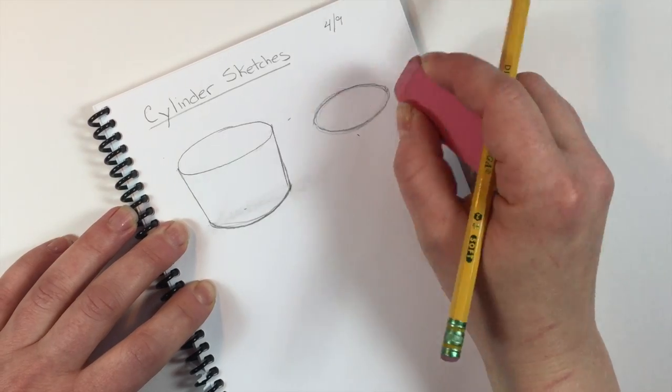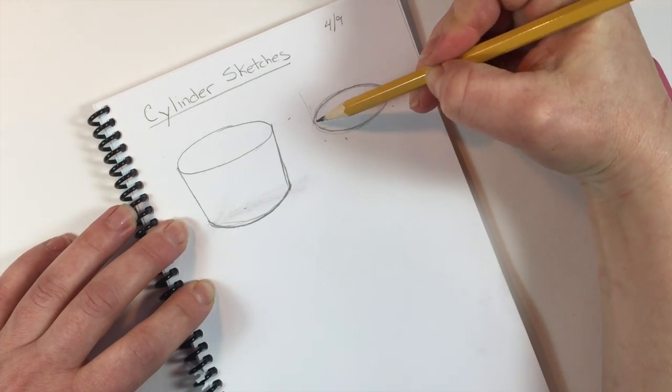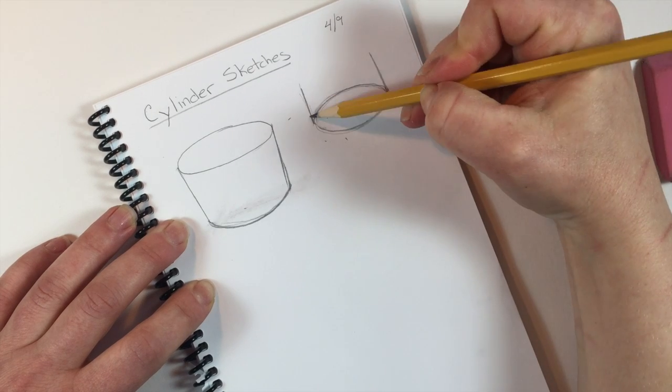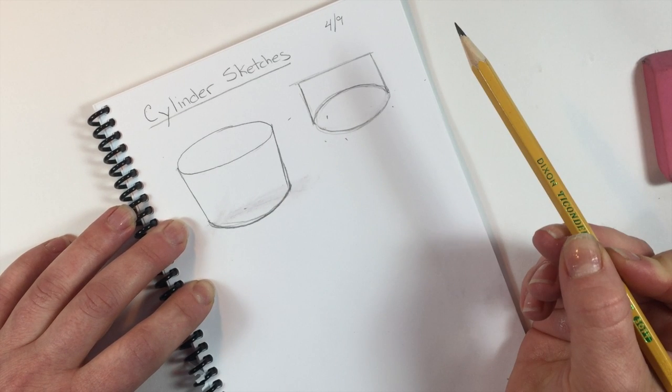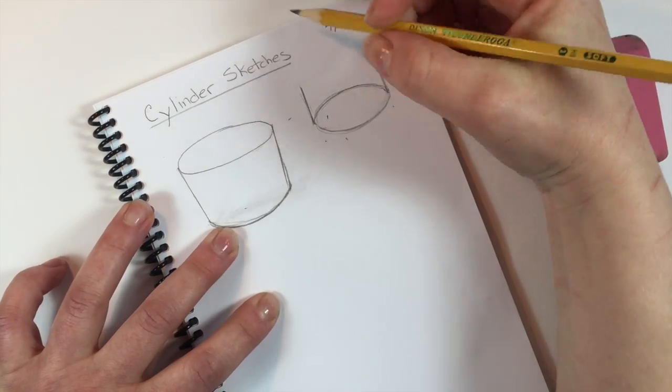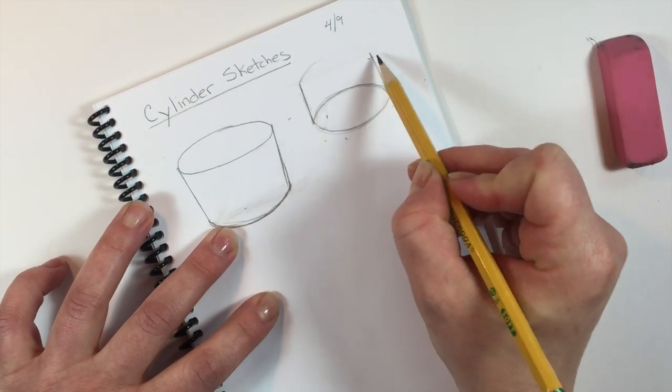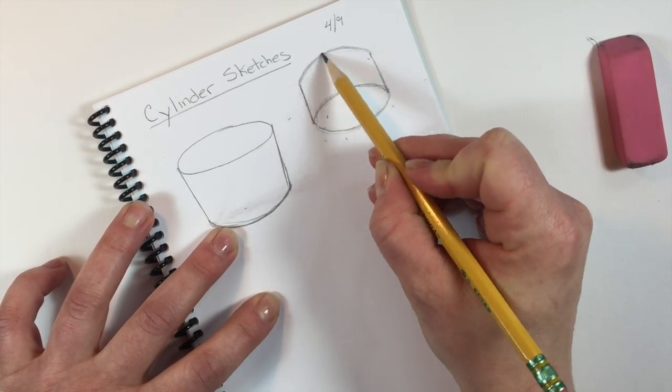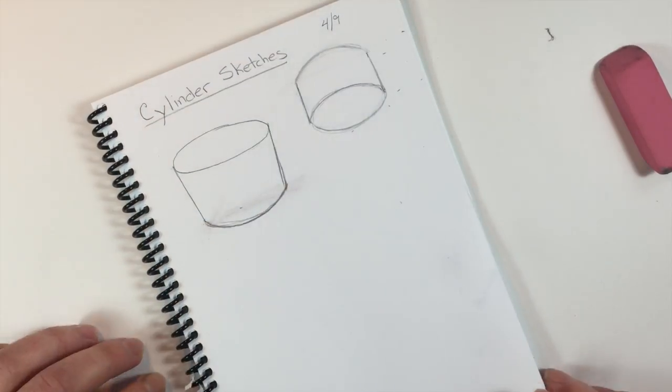See, this time I'm going to draw my sides going up instead of down. So my oval is the bottom and now I'll make the top. Nope, I did it again! Okay, I need to make sure that the top is also curved so it matches that bottom oval.